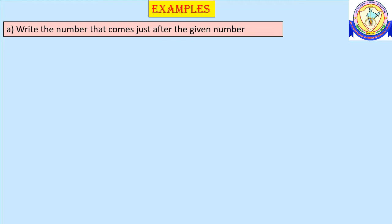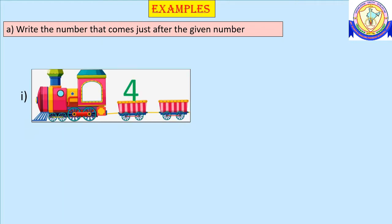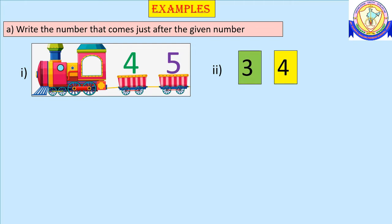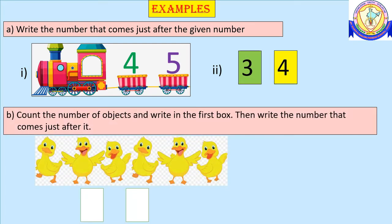Let's solve some examples. Write the number that comes just after the given number. Here we can see the number four. A number just after any number is to the right of it, or counting forward one number, so we get number five. Here we have number three, and if you count one number forward, we get number four.